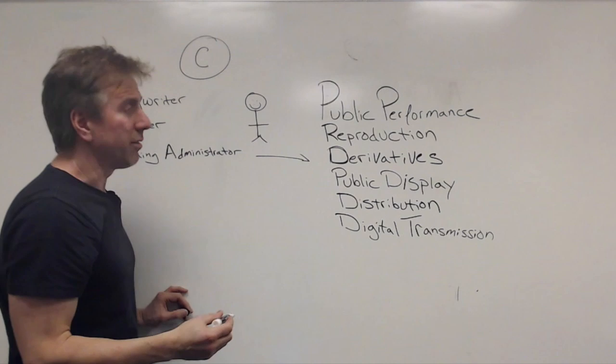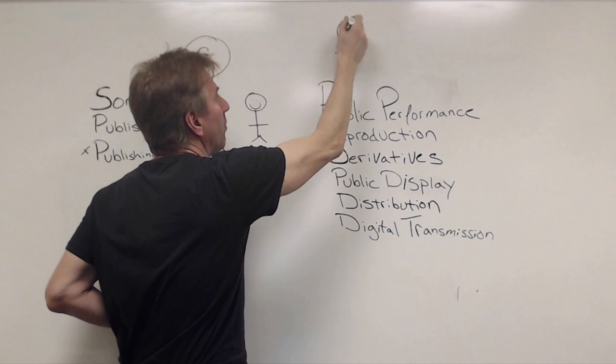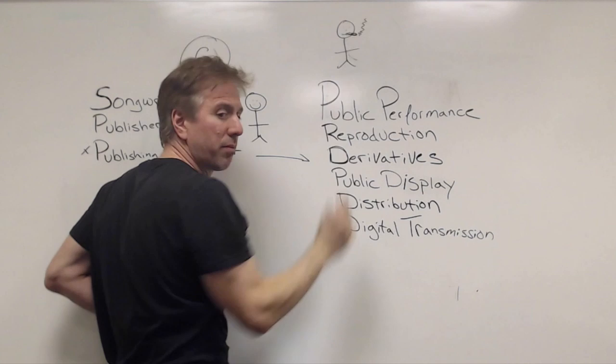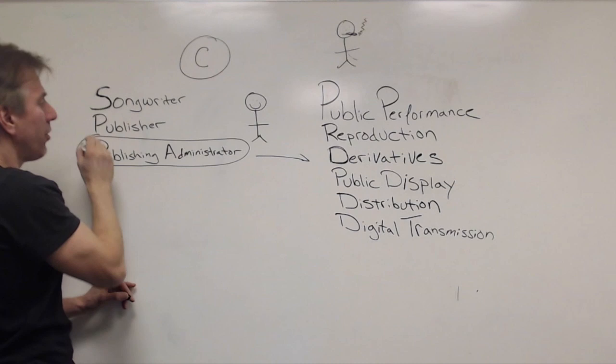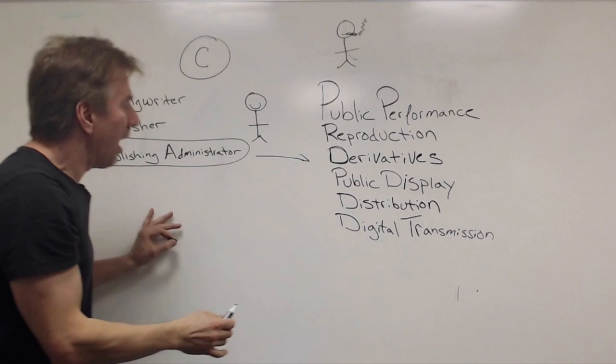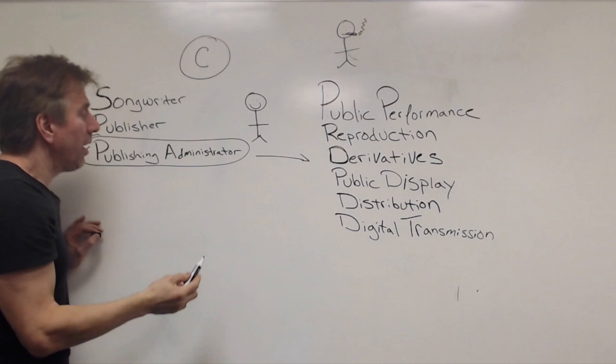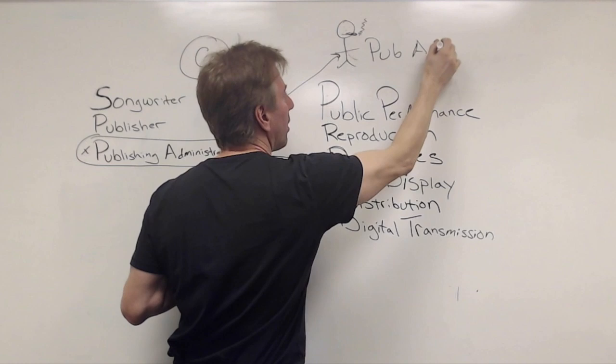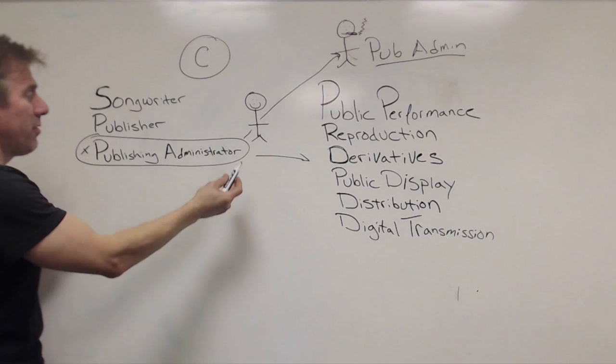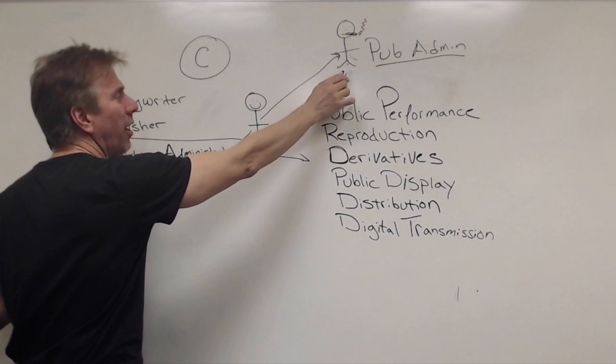However, you can do a deal with this person where you assign to this person, or this entity, this company, this right, right here. You're going to say, hey, I don't want to deal with licensing and collecting the money. I just want to write songs, I want to own them, but can someone else do this work for me? In which case, you will do a rights assignment from you to them, and they become the publishing administrator. I'm going to shorten it, pub admin. So in this case, this particular songwriter, who is also the publisher, is saying, you deal with all the crap over here. I'm just going to go make music and makes me much happier.